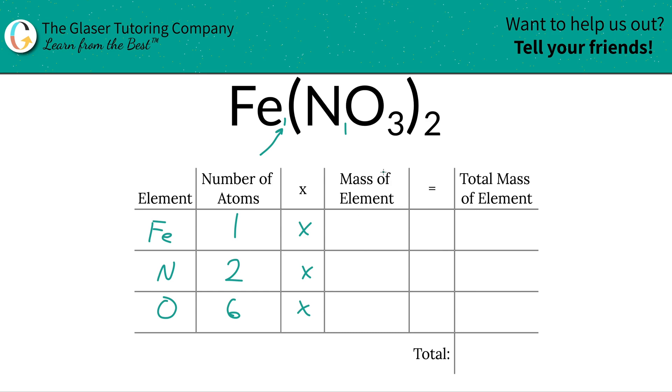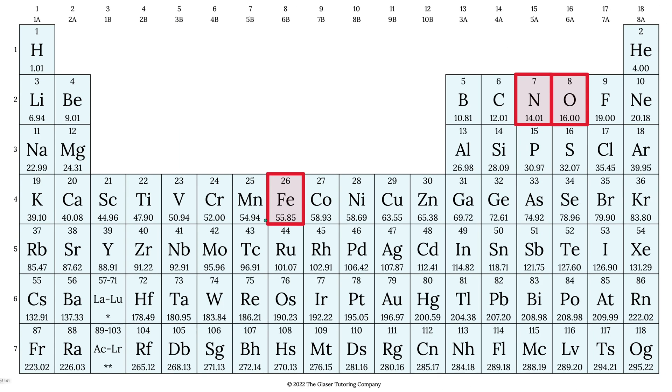Then we're simply going to multiply those number of atoms by the mass of the element. Where do we find the mass? To the periodic table. To the bat cave. I don't know why that spurred that memory, but okay.